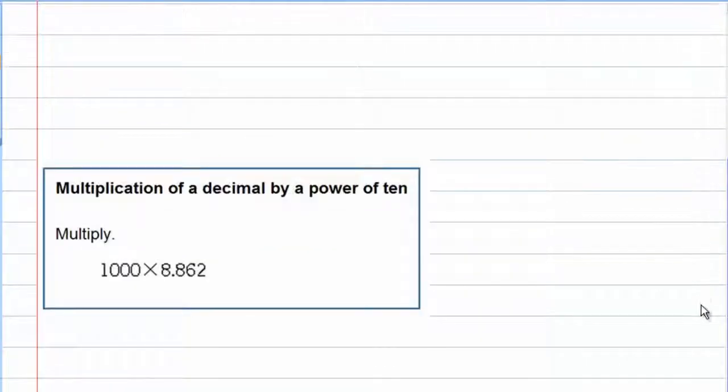All right, so, let's look at our example problem. We're multiplying 1,000 by 8.862, so the 1,000 has 3 zeros. I want to move the decimal 3 places in my decimal, and multiplying by 1,000 makes it bigger. So, I'm moving it to the right, and I'm moving it 3 times, 1, 2, 3. So, the decimal is now at the back of our number, 8, 8, 6, 2. The decimal is at the rear, so 8,862.